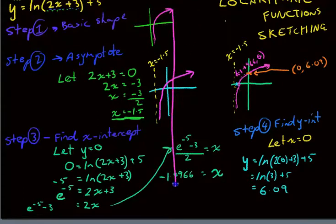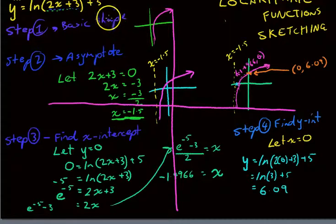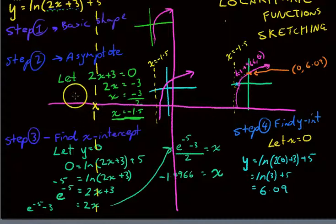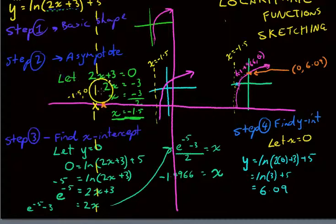Here's my Cartesian plane. We have an asymptote at this point here, which is negative 1.50. Now, we have an x-intercept very, very close to that at negative 1.4966. And we have an x-intercept up here at 0, 6.09.